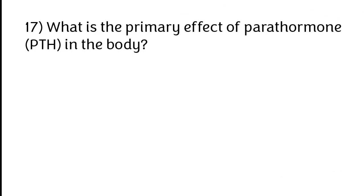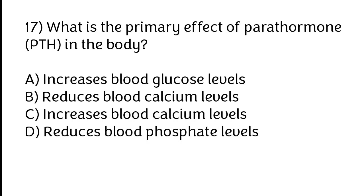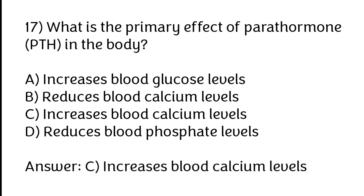What is the primary effect of parathyroid hormone in the body? Options: A) Increases blood glucose levels, B) Reduces blood calcium levels, C) Increases blood calcium levels, D) Reduces blood phosphate levels. The correct answer is option C, increases blood calcium levels.